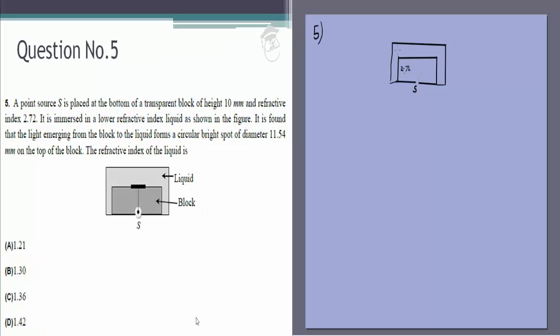The block has a refractive index of 2.72 and the liquid has refractive index n which we need to find out. We are given that the light emerging from the block to the liquid forms a circular bright spot of diameter 11.54 mm on the top of the block.